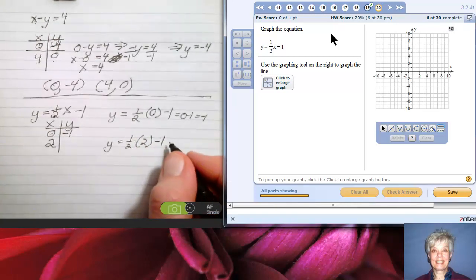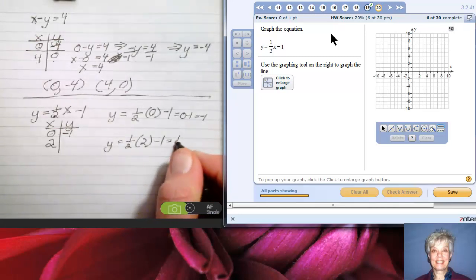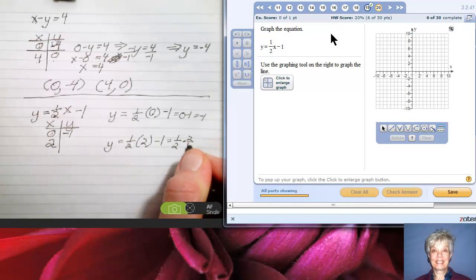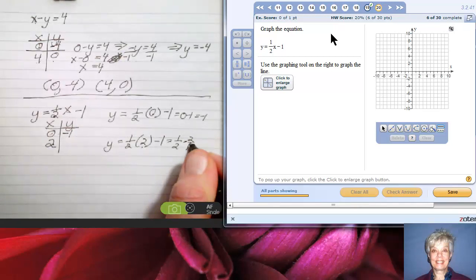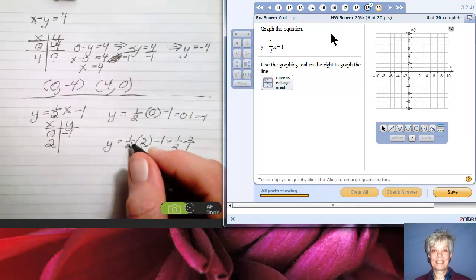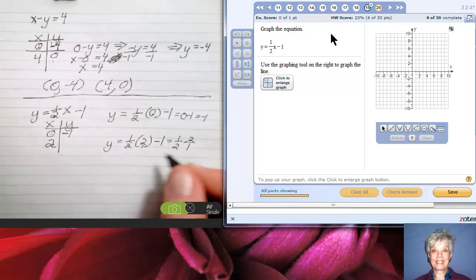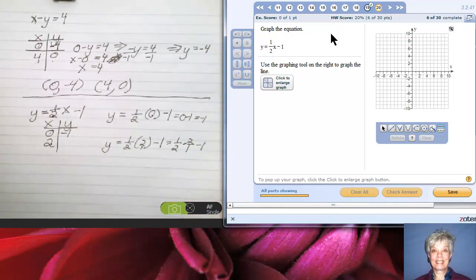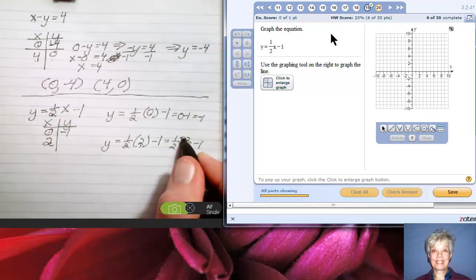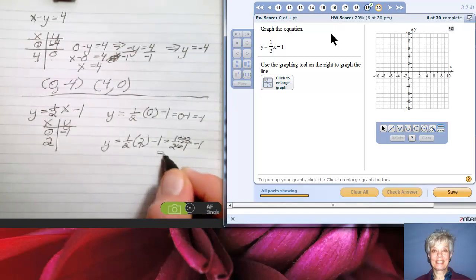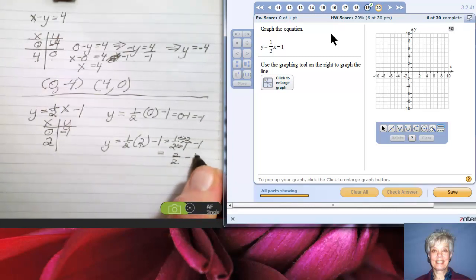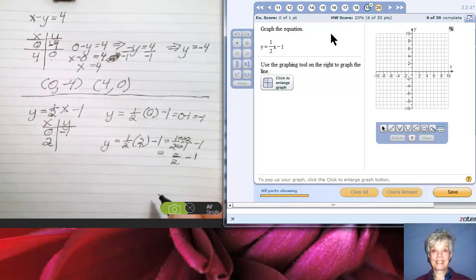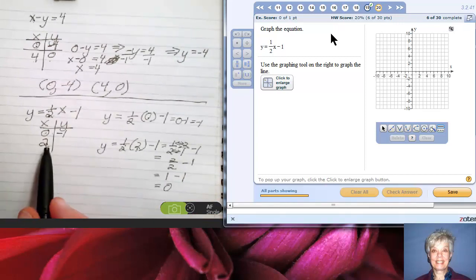1/2 times 0 is 0, so I'll have 0 minus 1, which is negative 1. So I put a negative 1 in here and now I have my first point. But I need to find my second point. I'll have y equals 1/2 times 2 minus 1. Now what is that? That's 1/2 times 2 over 1.